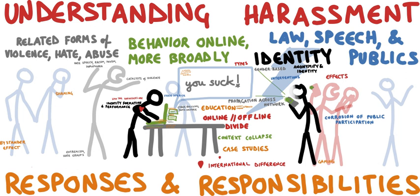Whereas content may be offensive in a non-specific way, harassment directs obscenities and derogatory comments at specific individuals focusing for example on gender, race, religion, nationality, and sexual orientation. This often occurs in chat rooms, through newsgroups, and by sending hate email to interested parties. Harassment on the internet also includes revenge porn.